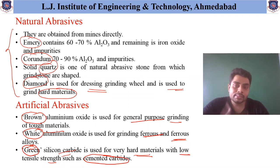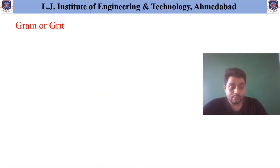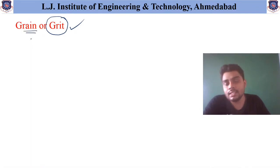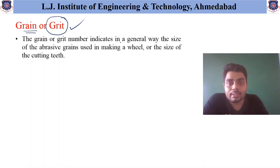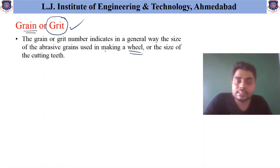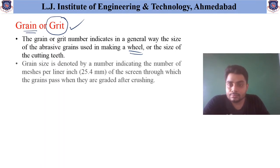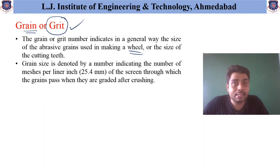Now let us discuss grain or grit. This word grain is also known as grit. The grain or grit number indicates in a general way the size of the abrasive grains used in making a wheel. This grain number indicates the number of particles that can be accommodated per square inch area.